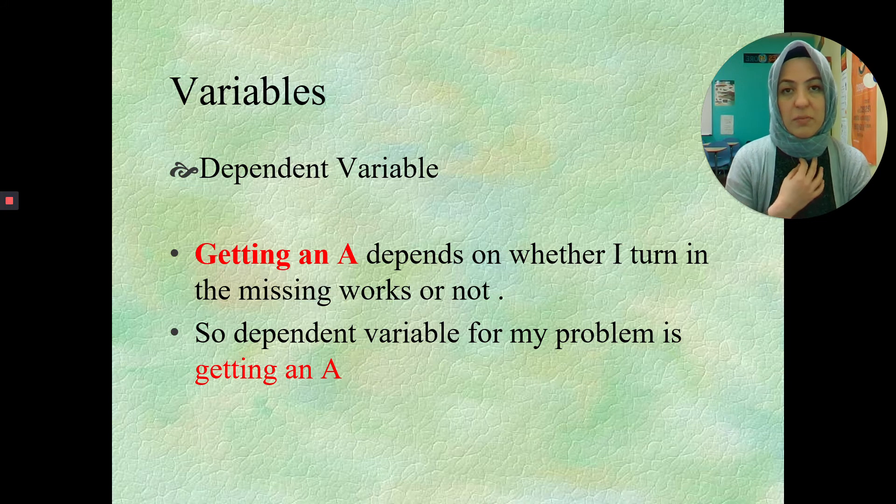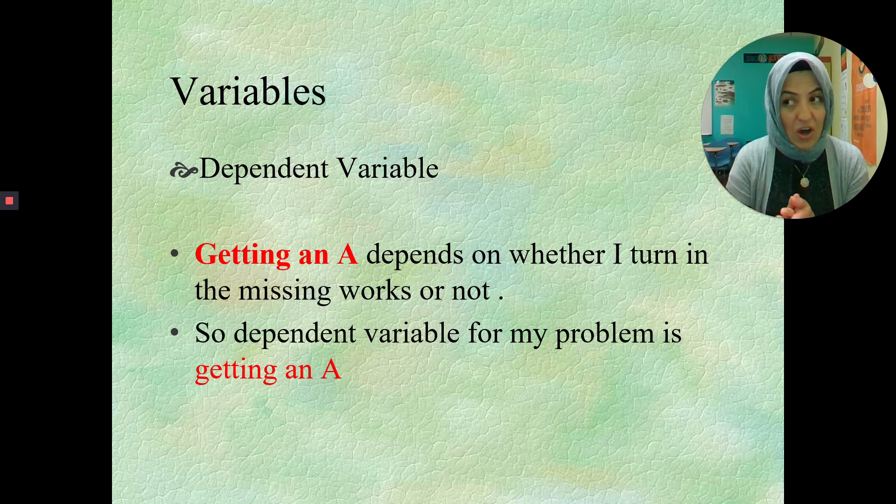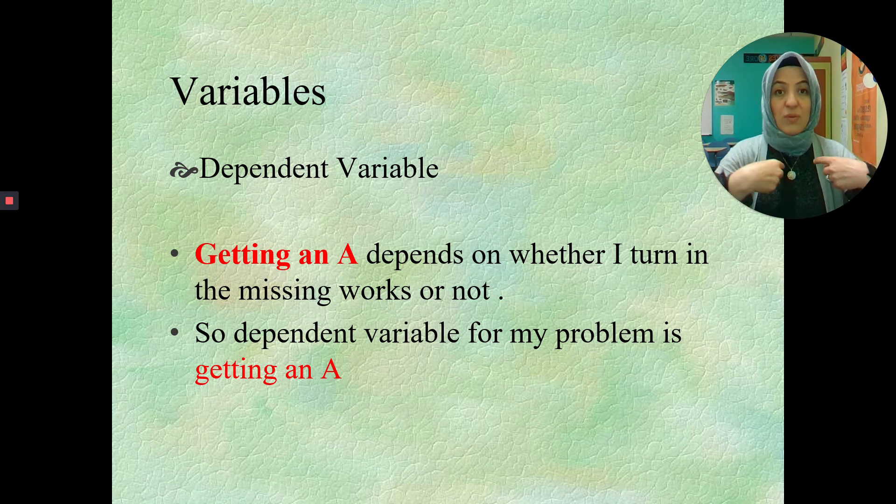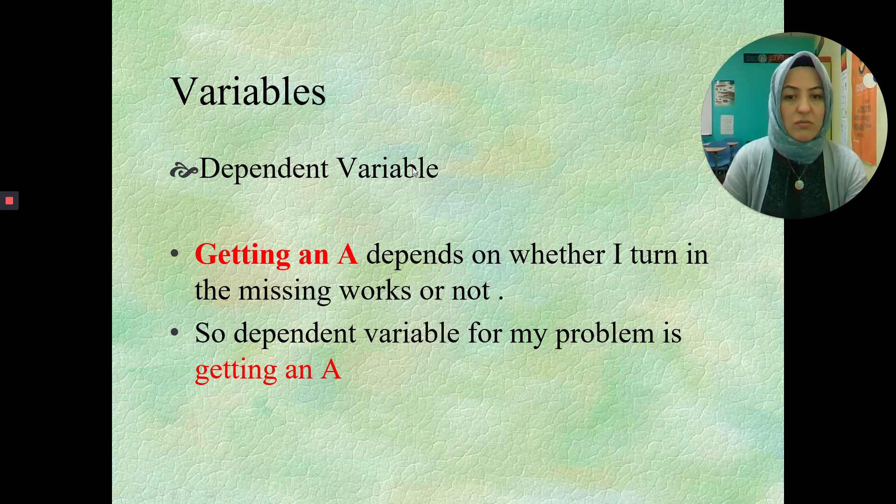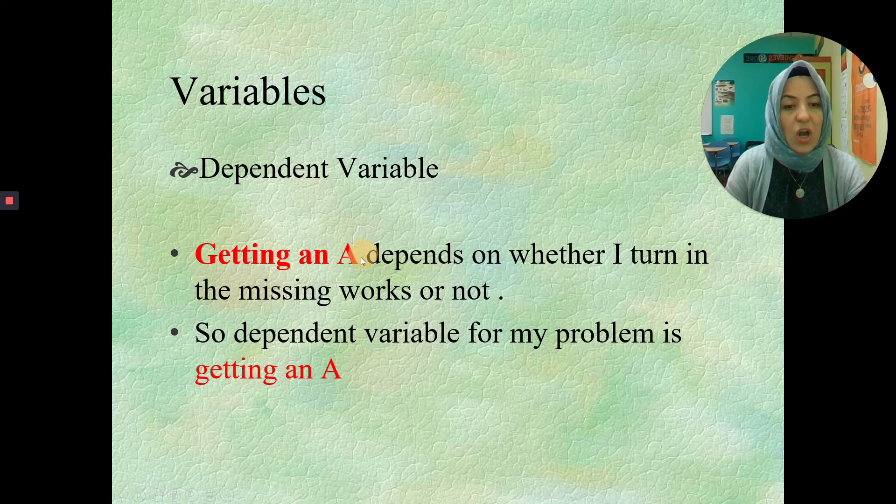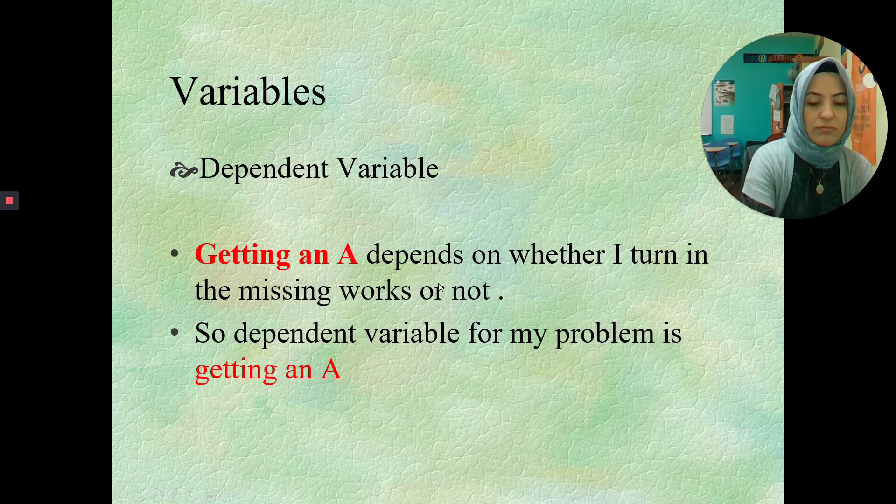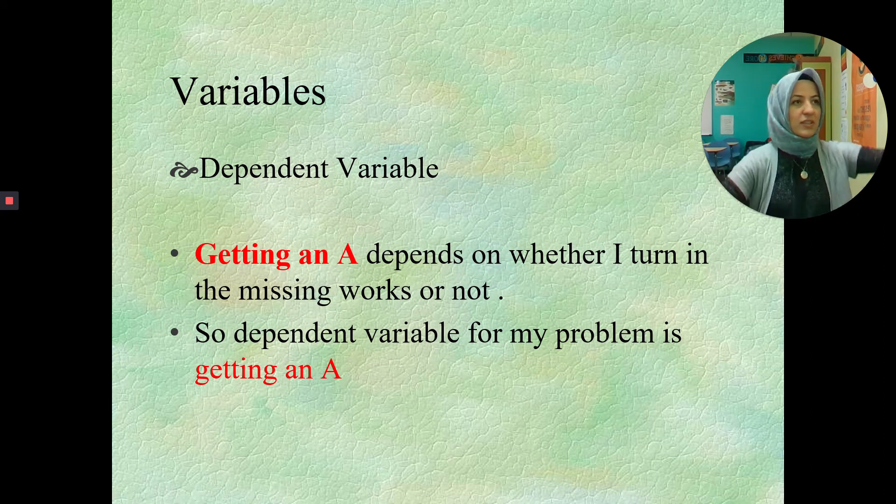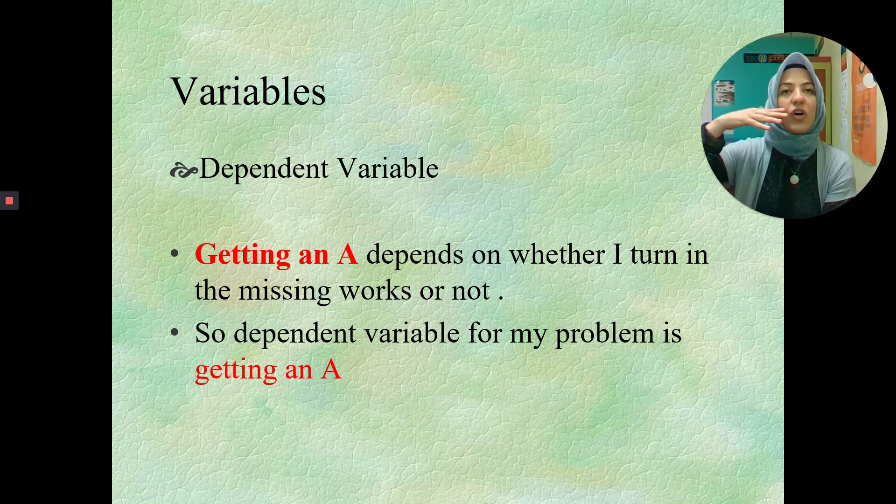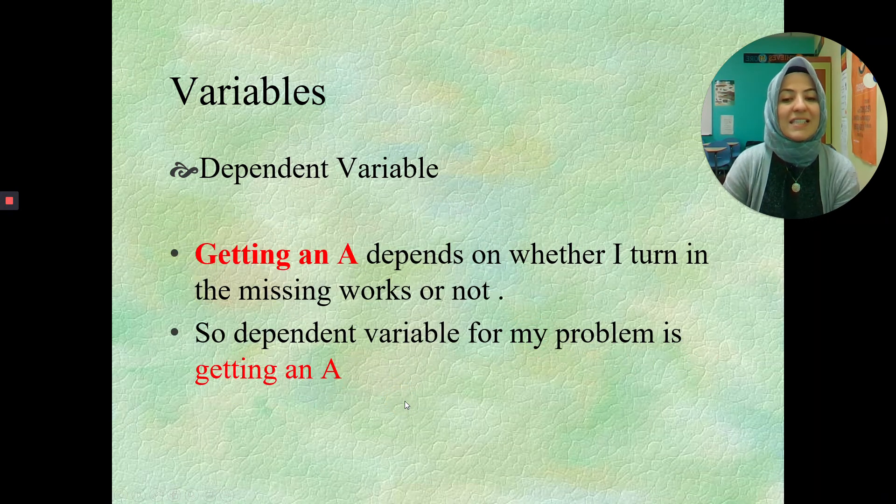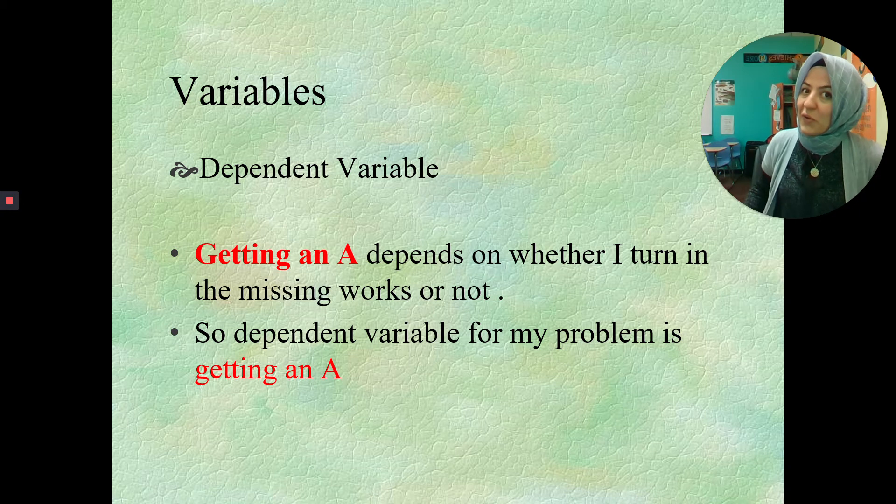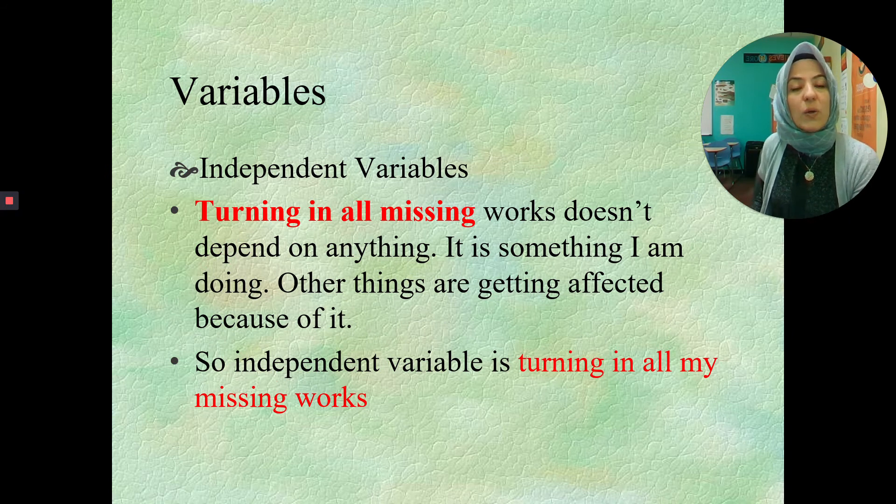Now, variables. We know what the variables are. So dependent variables are the ones that are depending on something. Independent is something that we are changing. So I'm not changing anything on the getting an A part, but the getting an A part depends on, like here, depending on whether I turn the missing work or not. If I don't turn the missing work, then my grade is going to go down. If I do turn in all the missing works, then I will get an A from science class. So dependent variables, I'm reading the bottom sentence. Dependent variable for my problem is getting an A. It depends on whether I turn it or not. So that's the dependent variable, it depends on something.